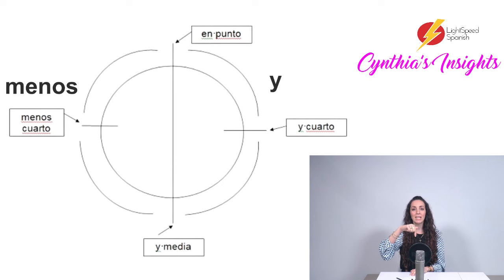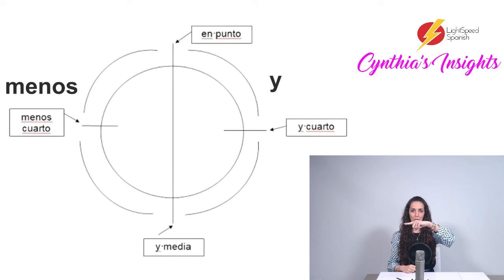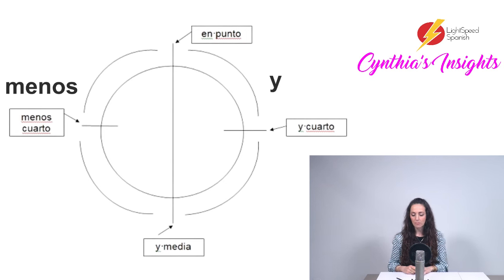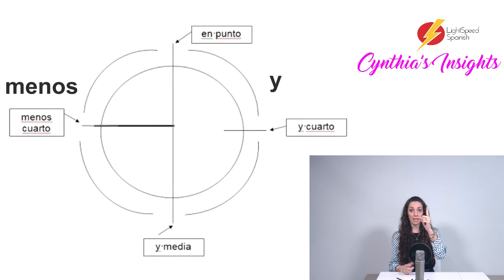'En punto' es 'o'clock.' 'Y media' is 'half past.' 'Y cuarto' is 'a quarter past.' 'Menos cuarto' is 'a quarter to.' Entonces, cuando la manecilla larga del reloj esté en la sección derecha, vamos a usar 'y.' Y cuando la manecilla larga de los minutos esté en la sección izquierda, vamos a usar 'menos.'